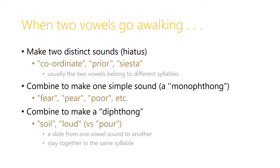Finally, we can have two vowels combining to make a diphthong. This is where there are two vowel sounds, but we slide from one vowel sound to the next one, and the two vowels are in the same syllable. This happens in English with words like 'soil' or 'loud', where we get the sounds 'oi' or 'ow', sliding from one sound to the next. And this is different from a monophthong like 'pour', where it's just a simple o sound.